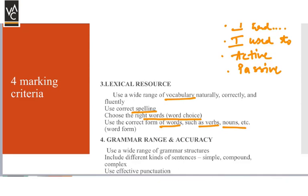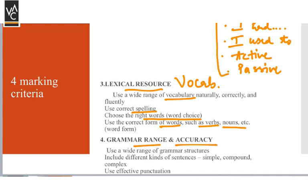The last criterion is Grammar Range and Accuracy. Apart from Lexical Resource — which covers vocabulary — Grammar Range and Accuracy means using a variety of grammatical structures correctly, as we discussed. Doing this will take you to 8 bands.